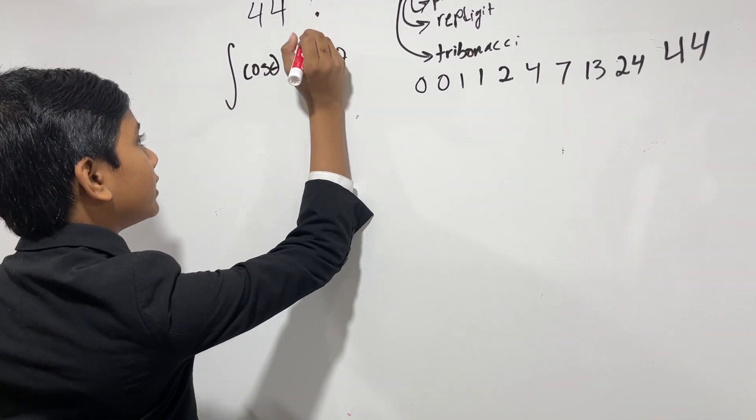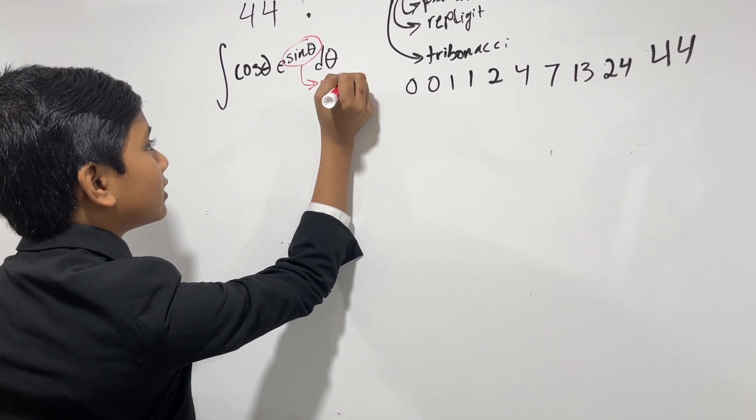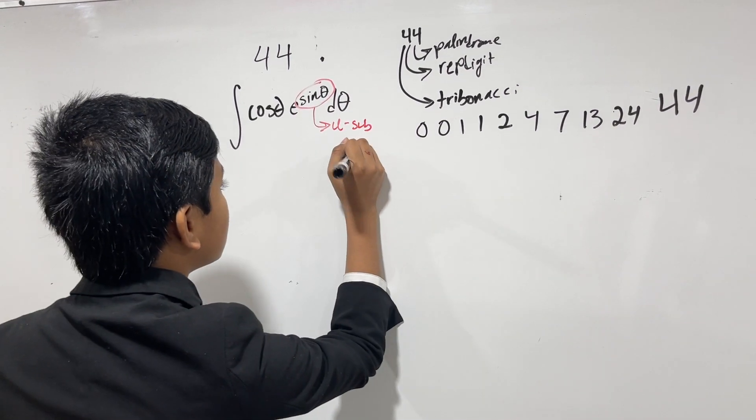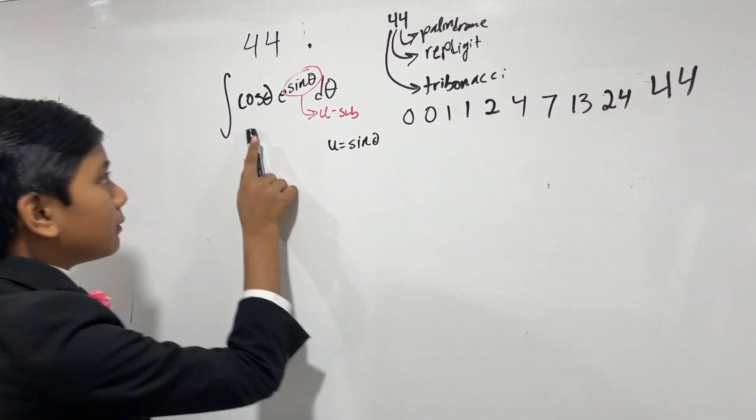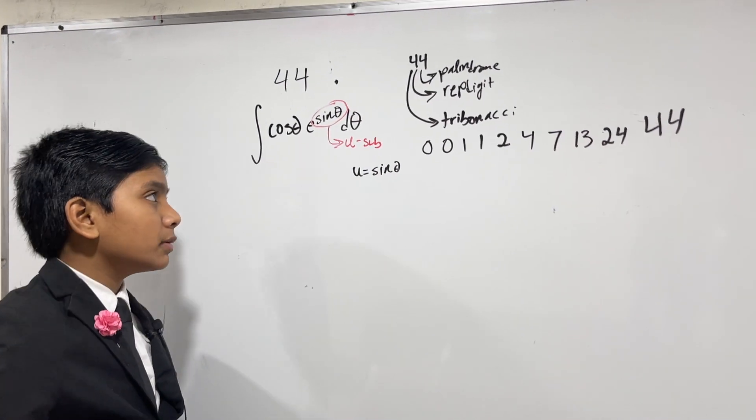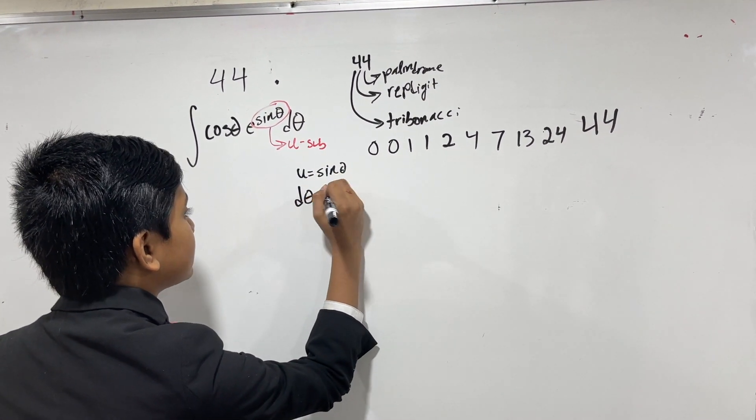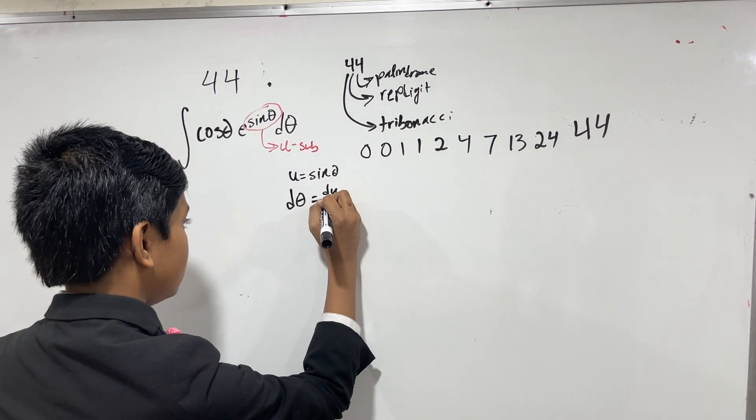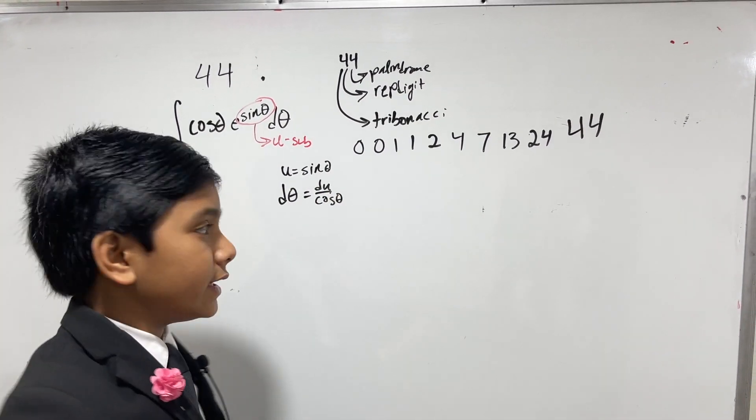So, what can we do? Well, let's take this part and u-sub it. So, let's say our u was sine theta, and now you can see how this works out, because cos theta is simply the derivative of sine theta, and we're going to be dividing by the derivative of sine theta. So, d theta is equal to du over cosine theta, because that's the derivative of sine theta.